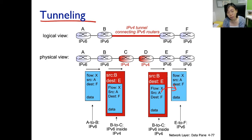The packet is forwarded into the rest of the IPv6 space, and F receives the packet that was destined for F.